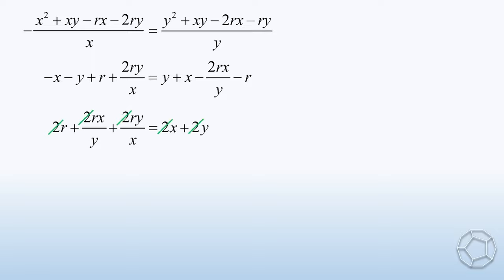The equation becomes 2R + 2RX/Y + 2RY/X = 2X + 2Y. Let's cancel out the factor two on both sides. Now, we can take out the common factor R on the left-hand side. The terms inside the bracket are 1 + X/Y + Y/X. It can be combined as a single fraction: (XY + X² + Y²) / XY.